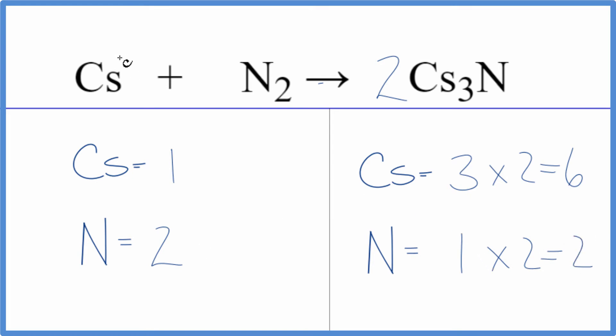So those are balanced and since this cesium here is all by itself we just put a six in front of it. One times six, that'll give us six and we're done. This equation is balanced.